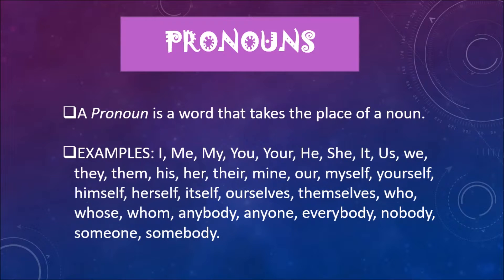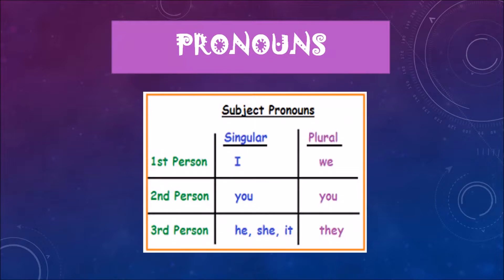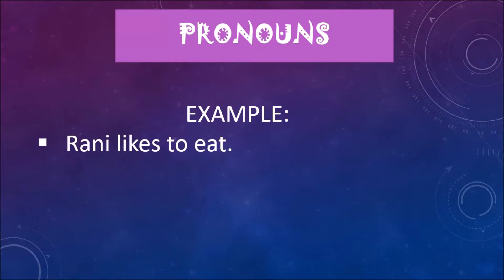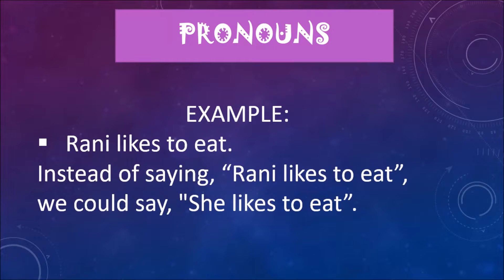Subject pronouns: first person singular — I, plural — we; second person — you; third person — he, she, it. Example of pronoun: Rani likes to eat. Instead of saying 'Rani likes to eat,' we could say 'She likes to eat.' Here, 'she' replaced 'Rani,' so a pronoun replaces the noun.